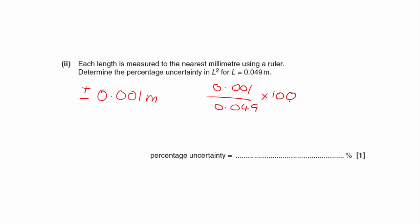And that comes out as being 2.04, so let's say that that's 2%. And because I'm going for L-squared, which means I'm feeding this uncertainty into it twice, because it's L times L, so I will have to double the percentage uncertainty, so that will be 4%.